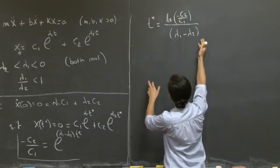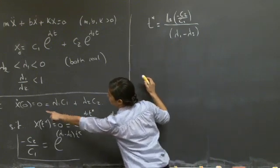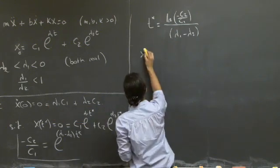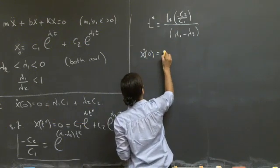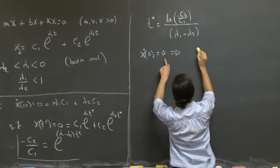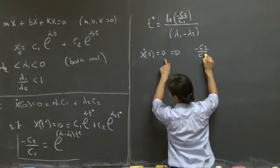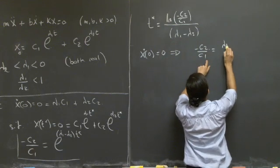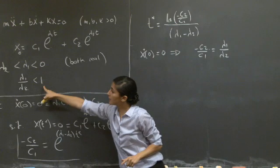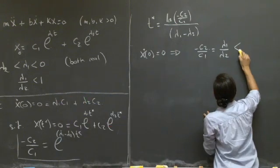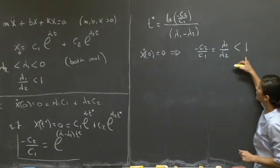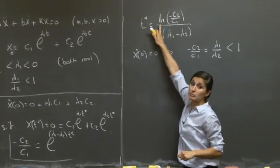Now let's go back to Part 1, where we use the condition x-dot of 0 equals 0. This gives us minus C2 over C1 equals lambda-1 over lambda-2. Given how lambda-1 and lambda-2 are defined — both real and negative — this ratio lambda-1 over lambda-2 is positive but less than 1, so minus C2 over C1 is less than 1.